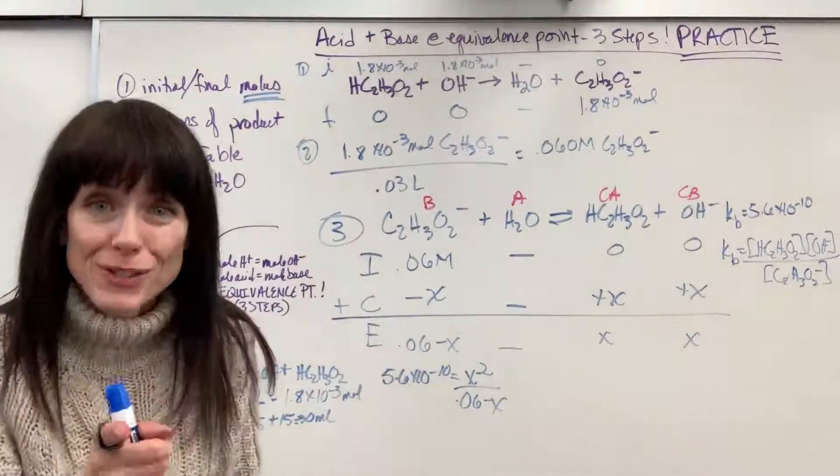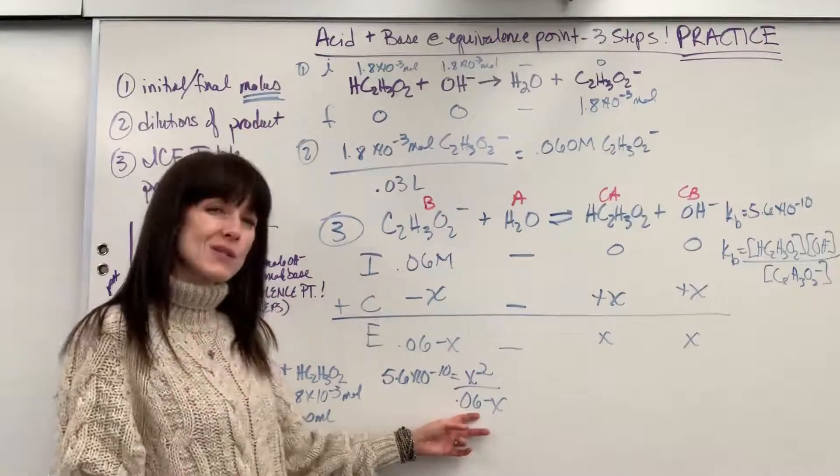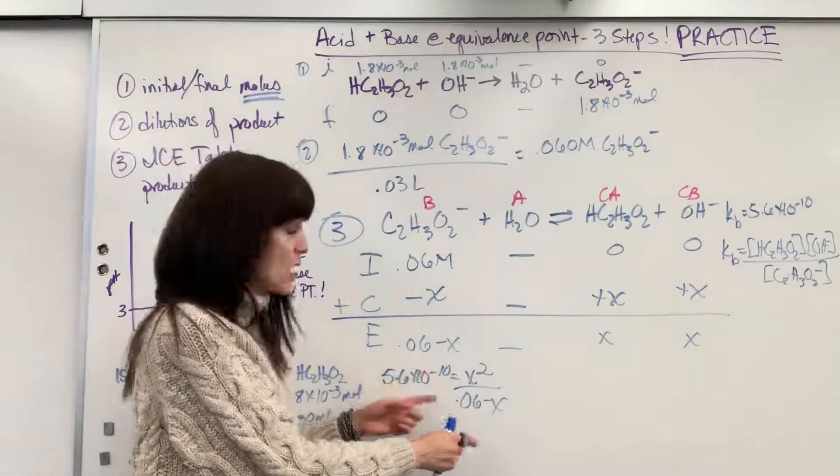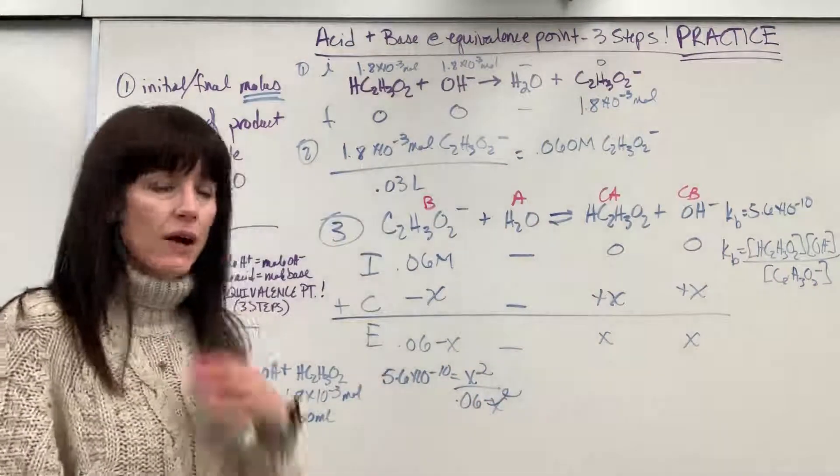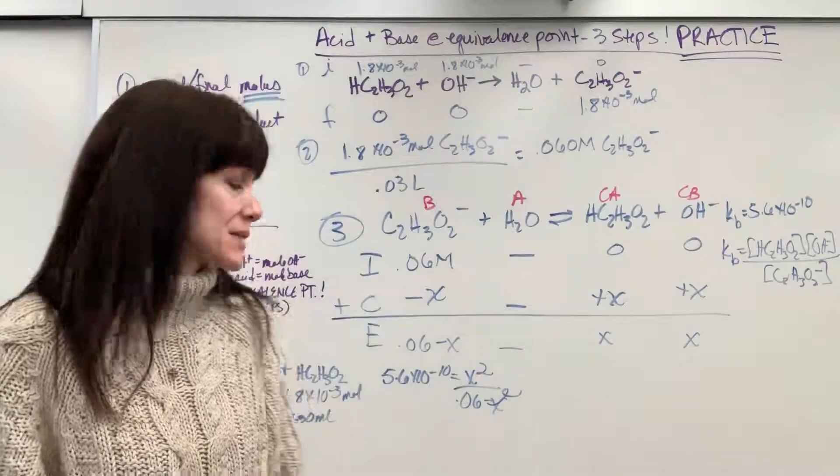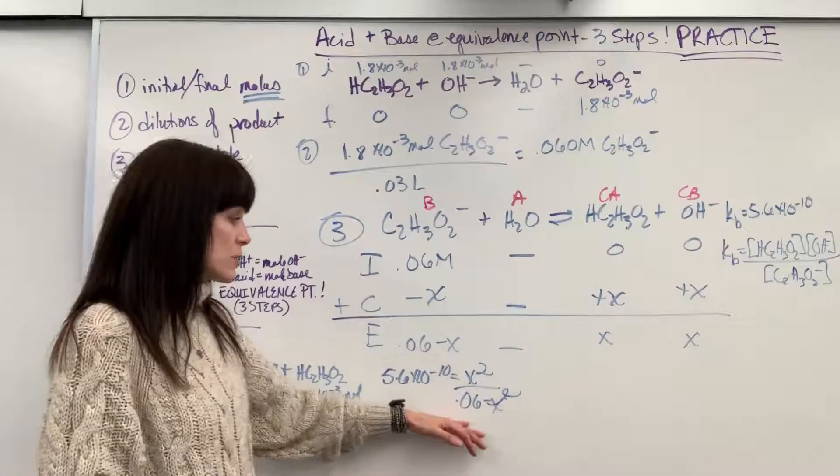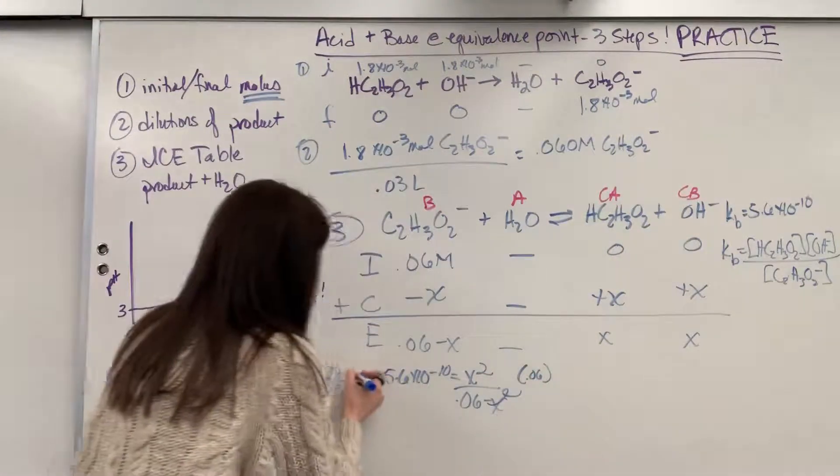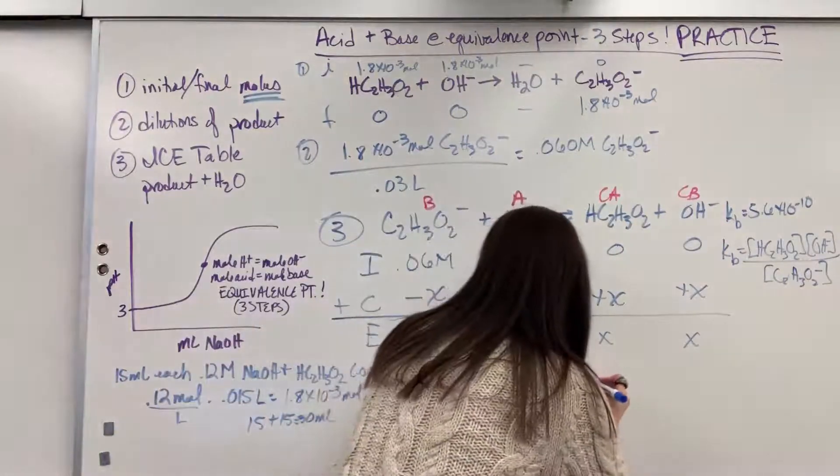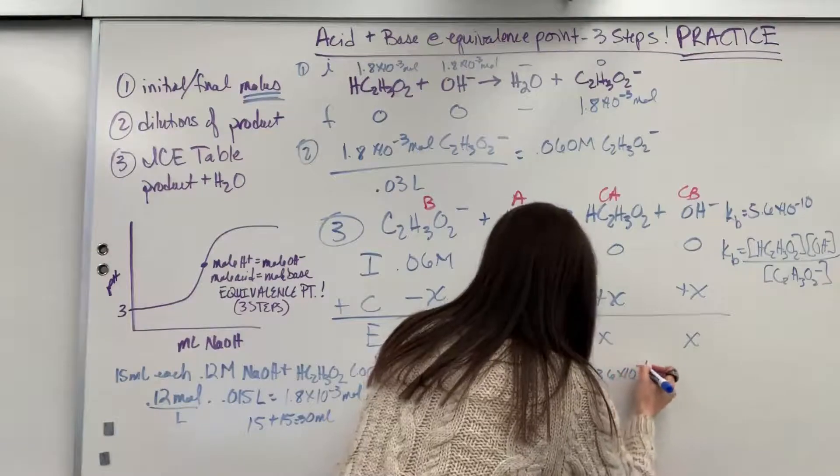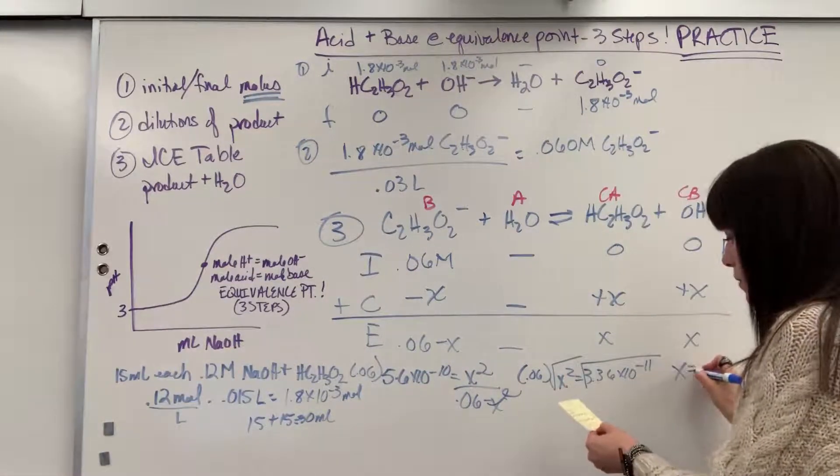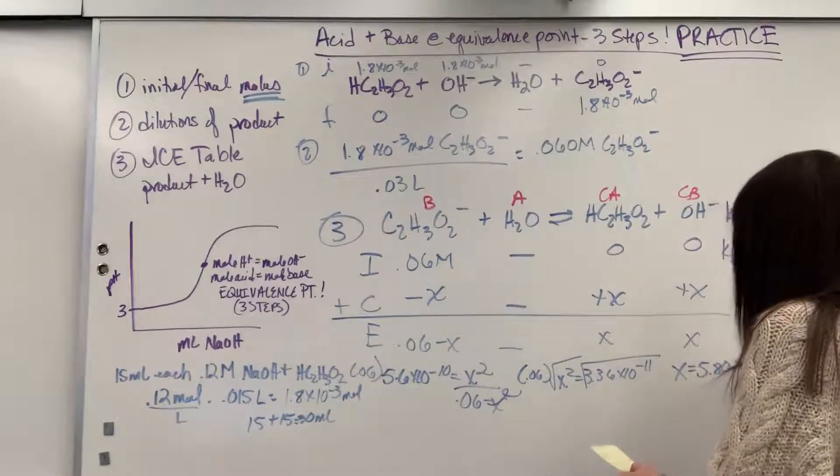So now we have an algebra problem. We're going to use our trick. This 6 would be 10 to the minus 2, and this kB is 10 to the minus 10. Remember, I need a factor of 100 difference. Well, I not only have two zeros, but I have eight zeros difference, which means this x is negligible. I love it when we can take that out. Simply means if I subtract the value of x from 0.06, that x is so small that when I subtract it, it will just round to 0.06. It doesn't change it for all intent and purpose. So let's multiply both sides by the 0.06. And we are going to get x squared equals 3.36 times 10 to the minus 11. How do you get rid of a square? Square root it, square root both sides, and x will equal 5.80 times 10 to the minus 6.